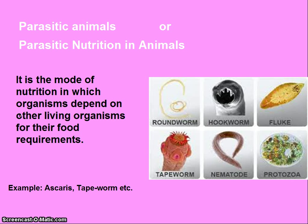Parasitic nutrition is the mode of nutrition in which organisms depend on other living organisms for their food requirements. They live on a host, and the host does not get any benefit from the parasites. Ascaris and tapeworm are examples of parasites.